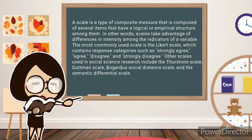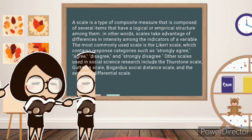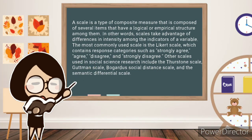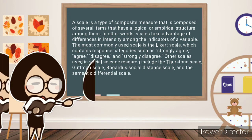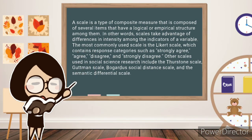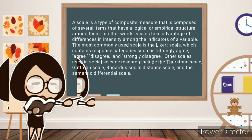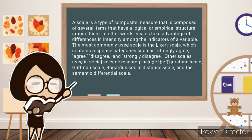A scale is a type of composite measure that is composed of several items that have a logical or empirical structure among them. In other words, scales take advantage of differences in intensity among the indicators of a variable. The most commonly used scale is the Likert scale, which contains respondent categories such as strongly agree, agree, disagree, and strongly disagree.